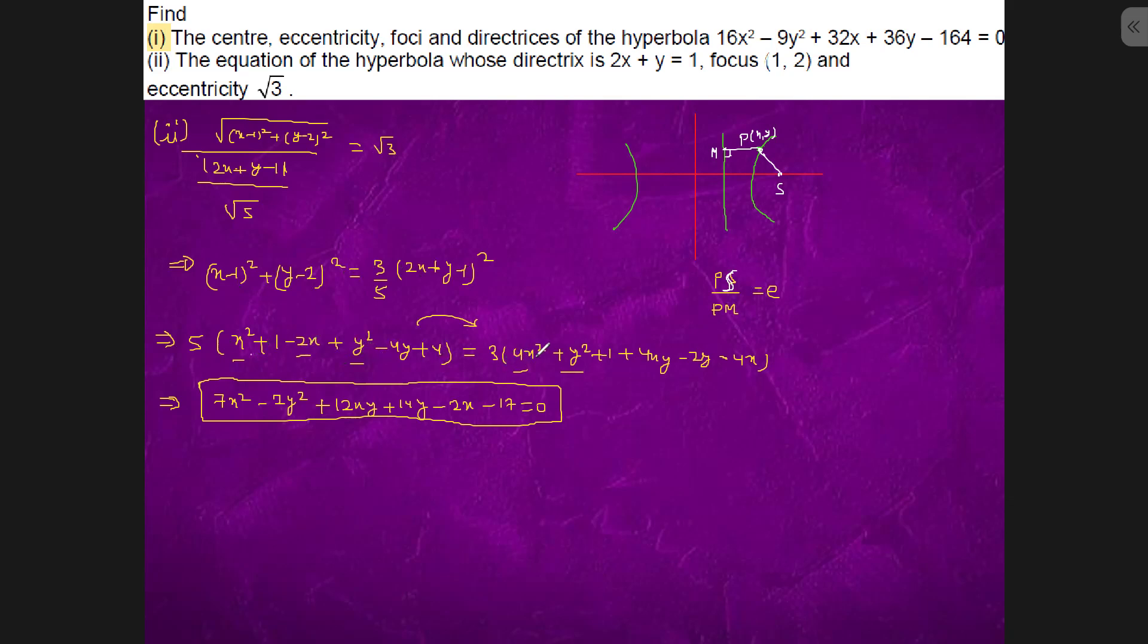Equals to 3 into 4x squared plus y squared plus 1 plus 4xy minus 2y minus 4x. Then we get 3x squared plus 12xy plus 3y squared minus 2x minus 17 equal to zero. So this is the required equation.